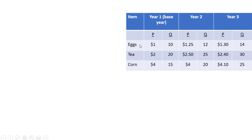So here's our data. We have three goods, with price and quantity for each year. Year one will be our base year.